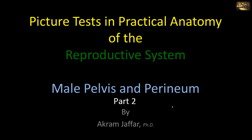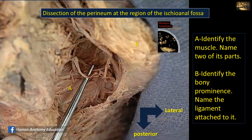Now I will deal with the gross anatomy of a male pelvis and perineum. Identify the muscle, name two of its parts, and identify the bony prominence and name the ligament attached to it.